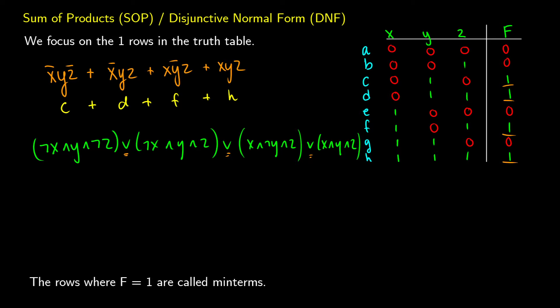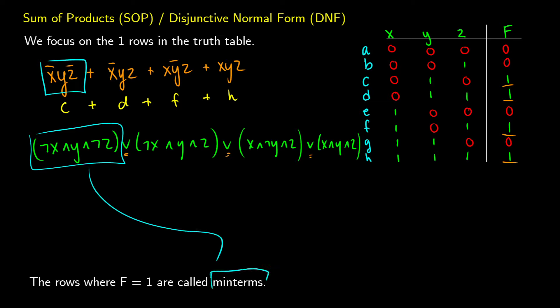All of these terms — whether in boolean logic like not-x, y, not-z, or in propositional logic like not-x and y and not-z — are called minterms. Each one is called a minterm. The sum of all these minterms gives us the sum of products or disjunctive normal form — our SOP or DNF.